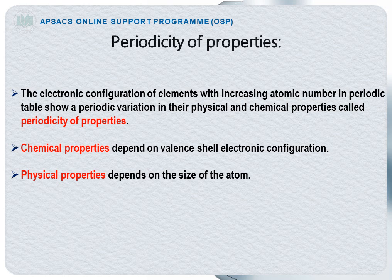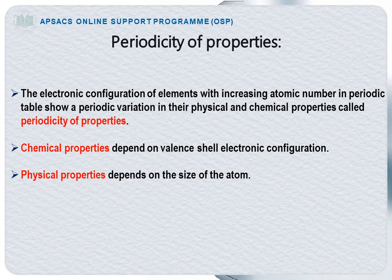Now what does Periodicity of Properties actually mean? The electronic configuration of elements with increasing atomic number in the Periodic Table show a periodic variation in their physical and chemical properties — that is called Periodicity of Properties. In the Periodic Table, 118 elements are arranged on the basis of increasing atomic number. When the atomic number of elements gradually increases, the physical and chemical properties also increase periodically. Properties are of two types: chemical properties and physical properties. Chemical properties depend on valence shell electronic configuration, meaning how electrons are arranged in the valence shell, in which subshell and in which orbital. Physical properties depend on the size of an atom. In this lecture, I will discuss five different properties one by one.